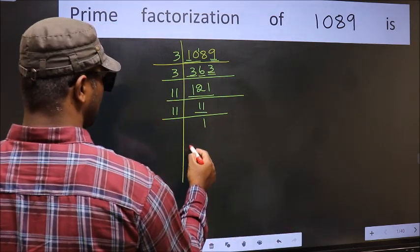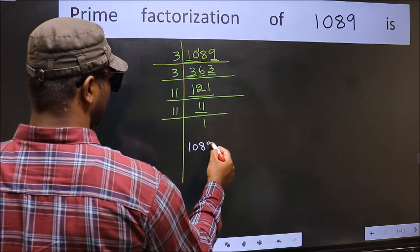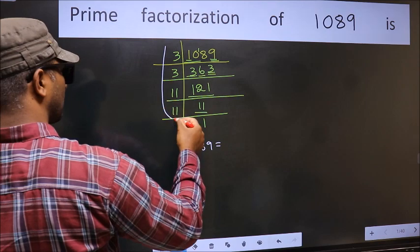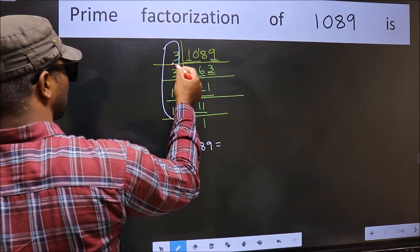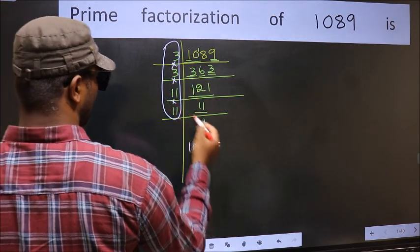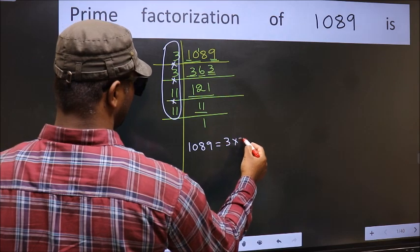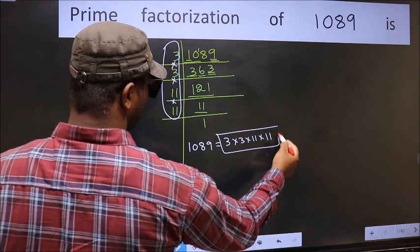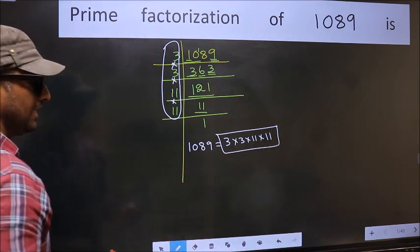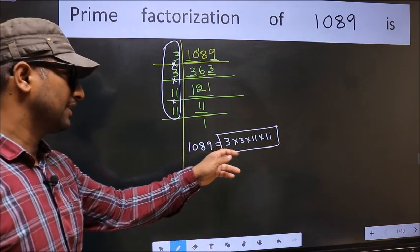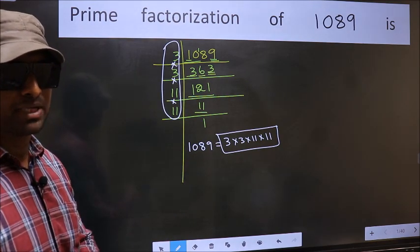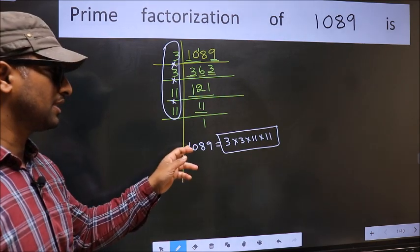So the prime factorization of 1089 is the product of these numbers: 3 into 3 into 11 into 11. This is the prime factorization of 1089. This is also called the product of prime numbers of 1089.